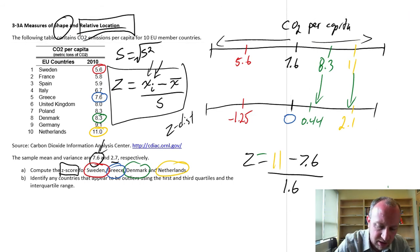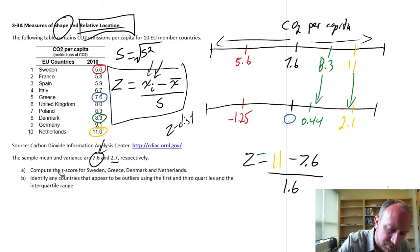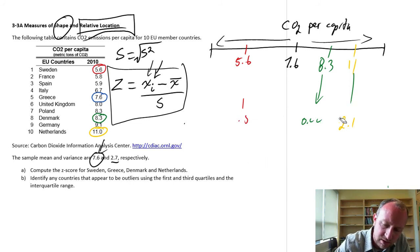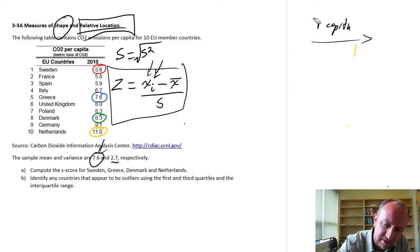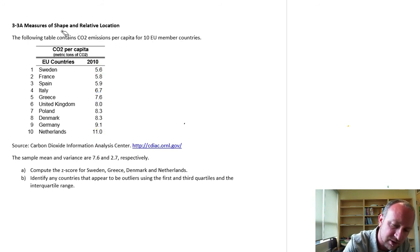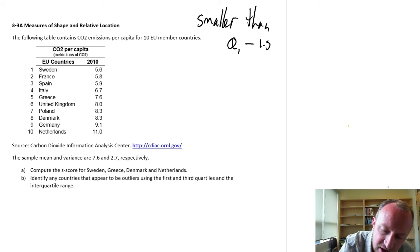Let's carry on. Part B. Identify any countries that appear to be outliers using the first and third quartiles and the interquartile range. Okay. Now we need a little bit more information. We need to calculate our first and second quartile and our interquartile range to identify outliers. So an outlier will be an observation that is smaller than the first quartile minus 1.5 times the interquartile range, and larger than the third quartile plus 1.5 times the interquartile range.